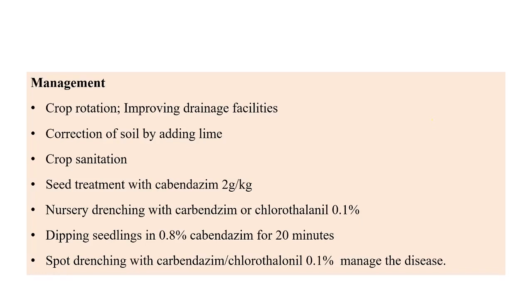Seed treatment with carbendazim at 2 g/kg seed is recommended, along with nursery drenching with carbendazim or chlorothalonil at 0.1%, dipping seedlings in 0.8% carbendazim for 20 minutes, and soil drenching with carbendazim or chlorothalonil at 1%. The most important natural management practice is application of lime at 2500 kg/hectare.